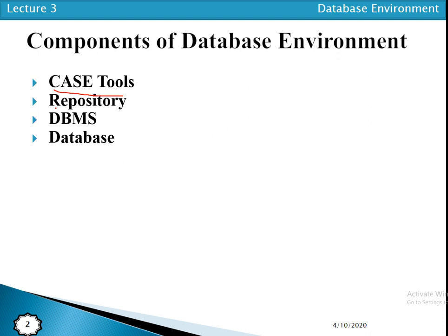The difference between repository and database: the repository is a storehouse of metadata — the structure of the data, data definitions. The database, on the other hand, is a collection of similar records with relationships between those records. The content and values of data are stored in the database, while the structure is stored in the repository.